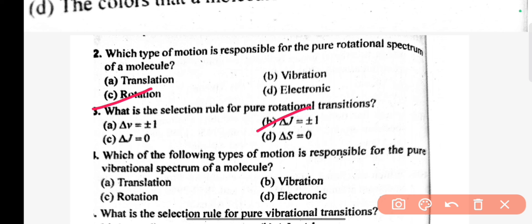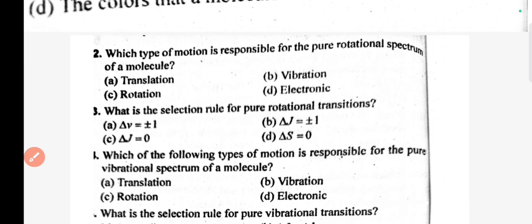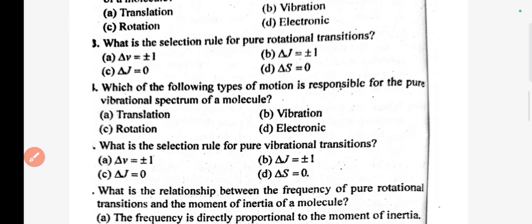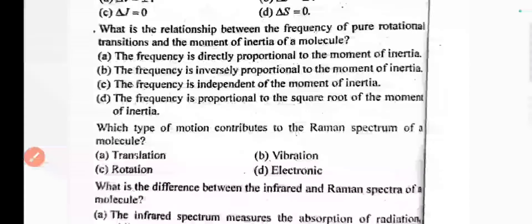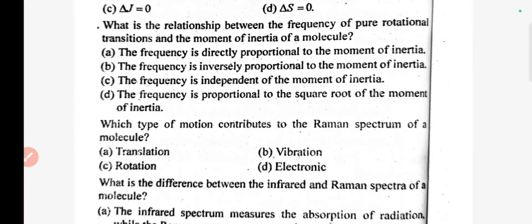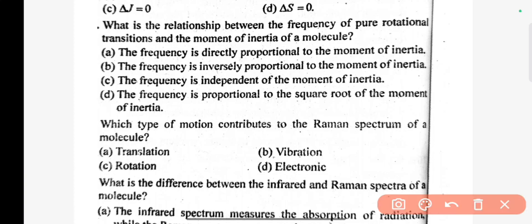What is the selection rule for pure rotational transitions? The correct answer is B. Which type of motion is responsible for the pure vibrational spectrum of a molecule? The correct answer is vibration. What is the selection rule for pure vibrational transitions? The correct answer is A. What is the relationship between the frequency of a pure rotational transition and the moment of inertia of a molecule? The correct answer is B.